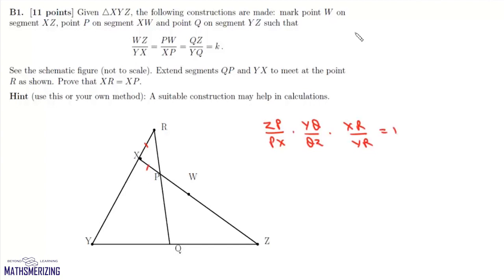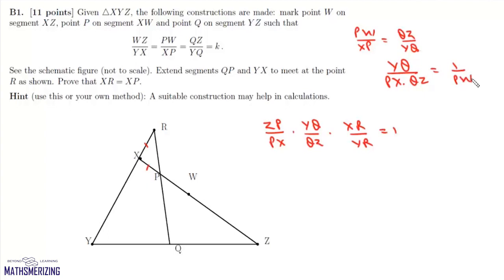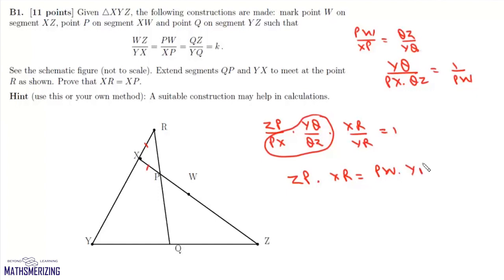The question says PW upon XP equals QZ upon YQ. Rearranging, YQ upon QZ equals 1 upon PW. Substituting into the Menelaus equation, ZP times XR equals PW times YR, or XR upon YR equals PW upon PZ.